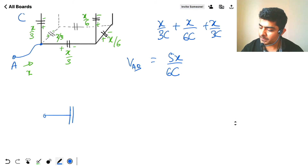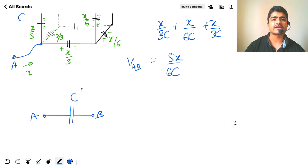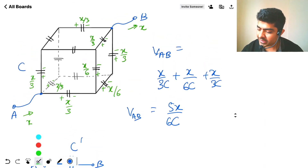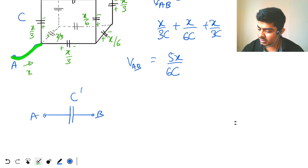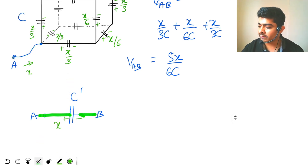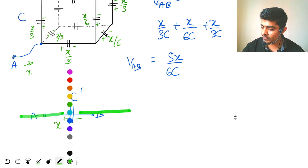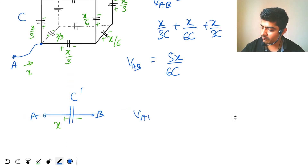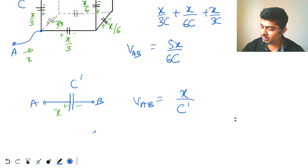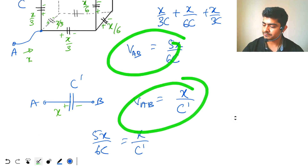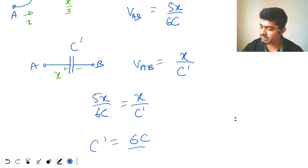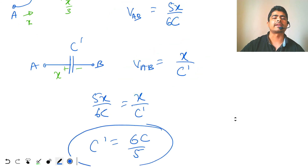Now between A and B I want a single equivalent capacitor of capacitance C'. The total charge entering from A is x, so the charge should also be x. V_ab equals x/C', so 5x/6C equals x/C'. These two should be equal, giving C' equals 6C/5. This is the final answer.